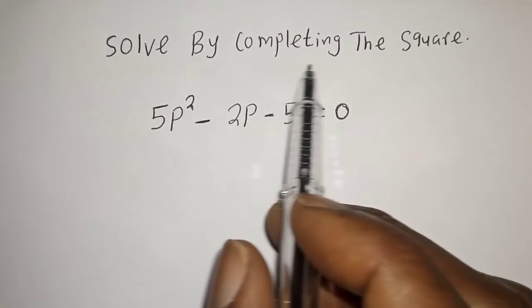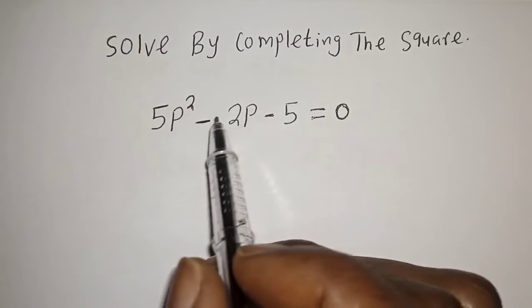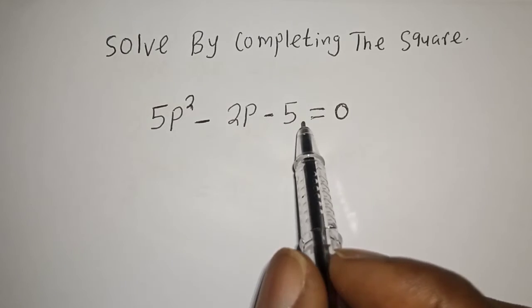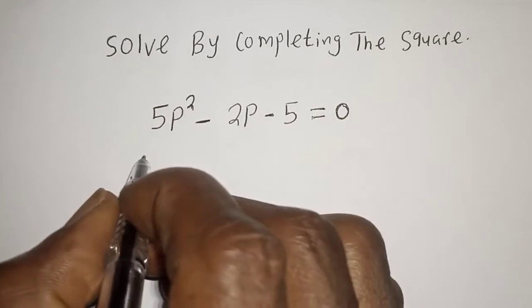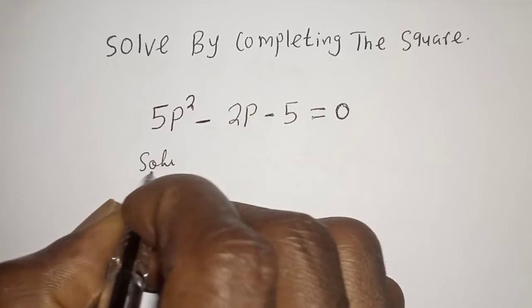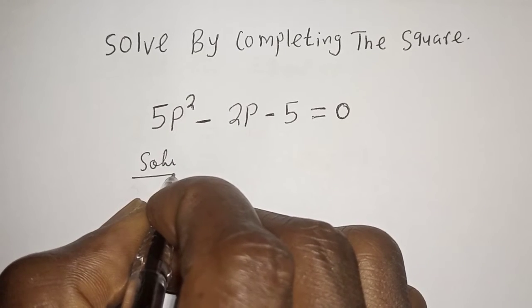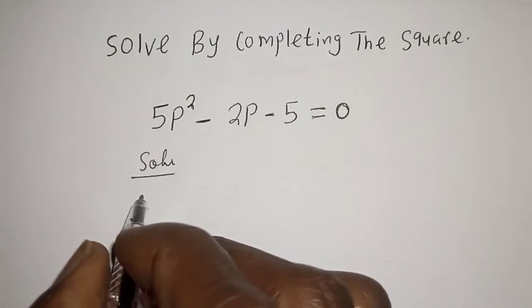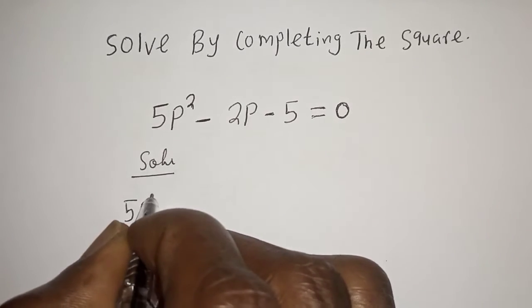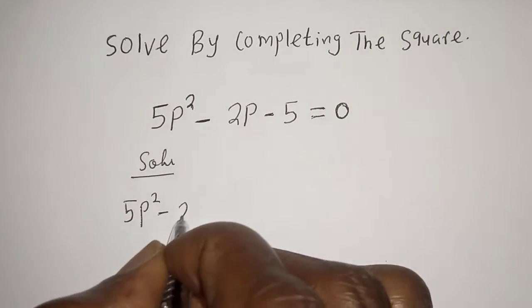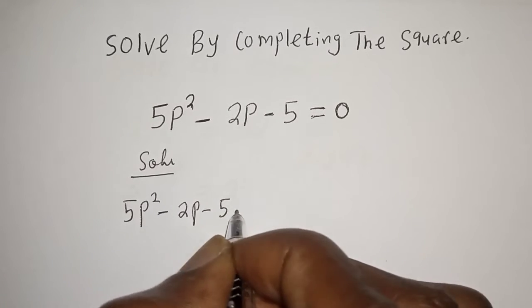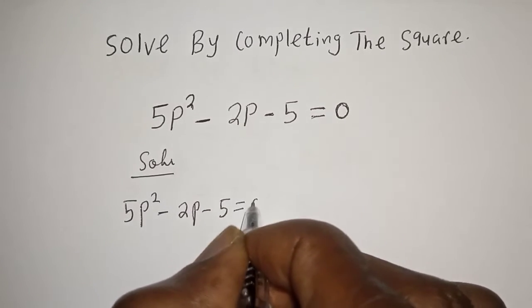Solve by completing the square. Given: 5p squared minus 2p minus 5 is equal to 0.